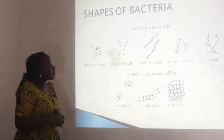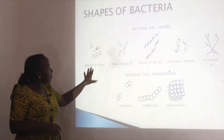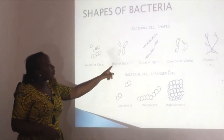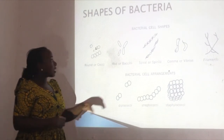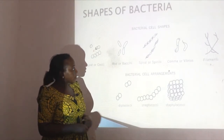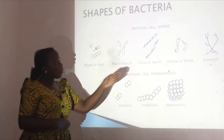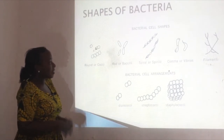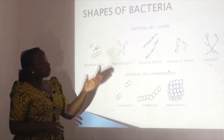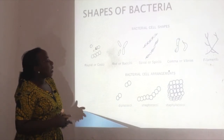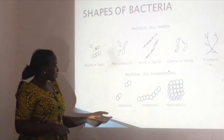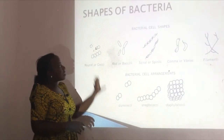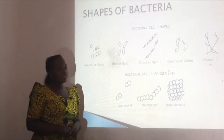Now let's look at the shapes of bacteria. Bacterial cell shapes include: round or coccus shape — these are called round bacteria; rod-shaped or bacillus; spiral or spirillum; comma-shaped or vibrio — a good example is Vibrio cholerae, which causes cholera; and filamentous, which has a shape like filaments. Bacterial cell arrangements include: diplococci, which means arranged in pairs; streptococci; and staphylococci.